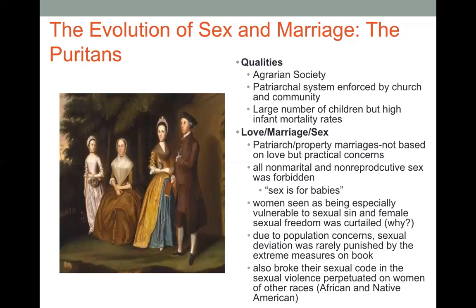Despite this, sexual deviation was rarely punished by the most extreme measures, particularly if it was related to premarital sex, because there often weren't enough people — particularly women — to imprison, expel, or put to death for so-called sexual sins. And of course, we also know that men broke their sexual code as well, oftentimes without punishment, particularly regarding sexual violence perpetrated on women of other races. Your textbook mentions African and Native American women in particular.